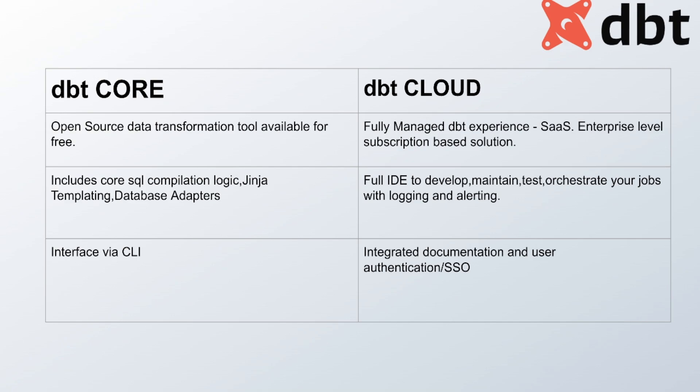dbt comes in two versions: dbt Core and dbt Cloud. dbt Core is the open source tool - you go directly into your command line interface and use dbt from your system. When you talk about dbt Cloud, you get a proper UI, similar to how Snowflake has a UI. In that UI you actually build models - a model essentially means the creation of a table, so each table is a model.